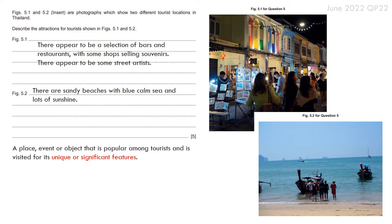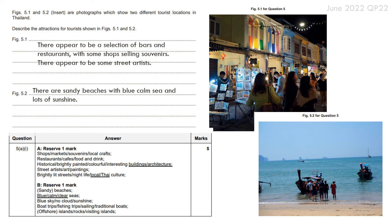For Figure 5.2, it's slightly easier: there are sandy beaches with blue, calm sea and lots of sunshine. Physical attractions tend to be more obvious in terms of why people are drawn there. Looking at the mark scheme, these observations tick all the boxes nicely.